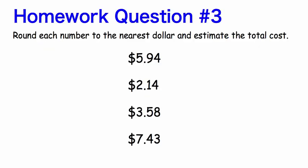Homework question number three. Round each number to the nearest dollar and estimate the total cost. For example, five dollars and ninety-four cents — are you going to climb the vine and round up to six dollars, or shut the door and round down to five dollars? Do that with all four dollar amounts and then add them all together.